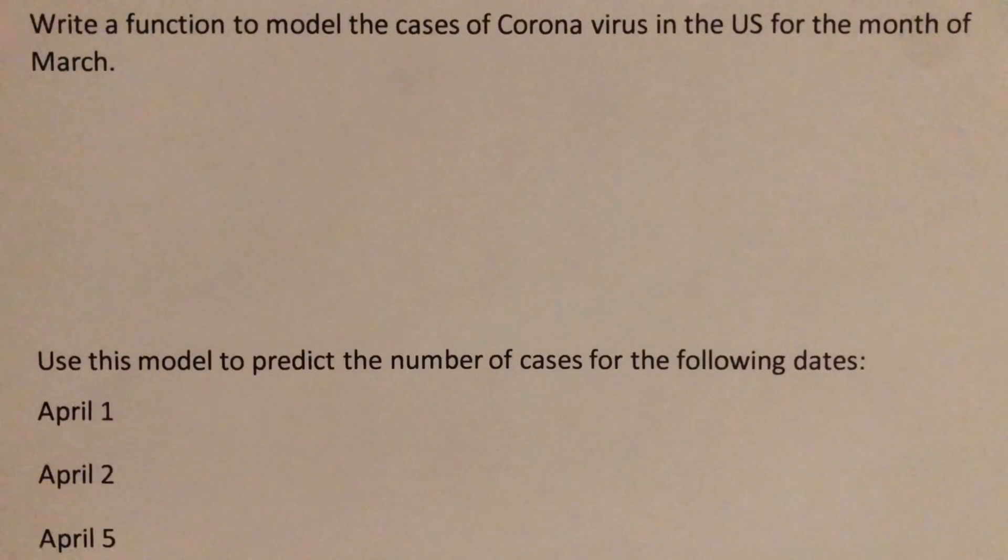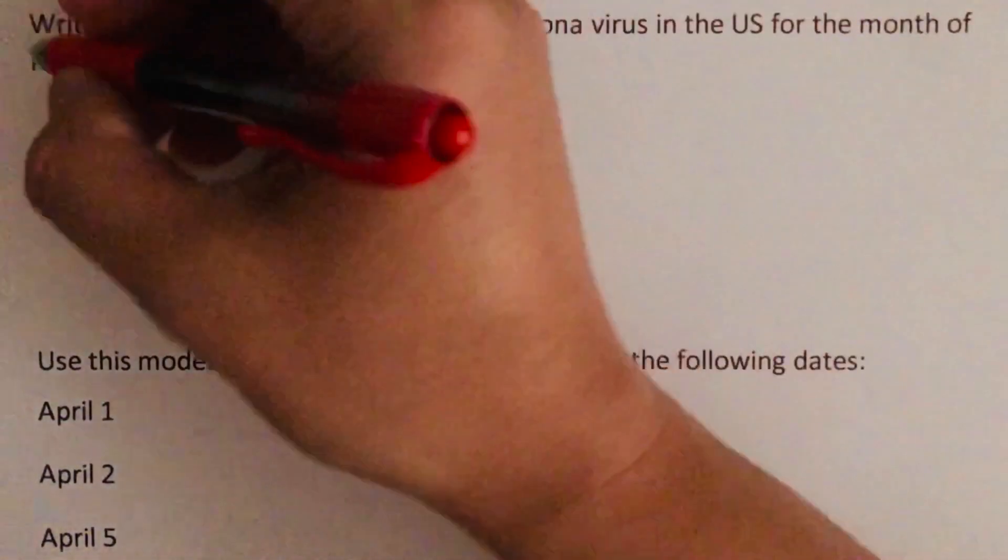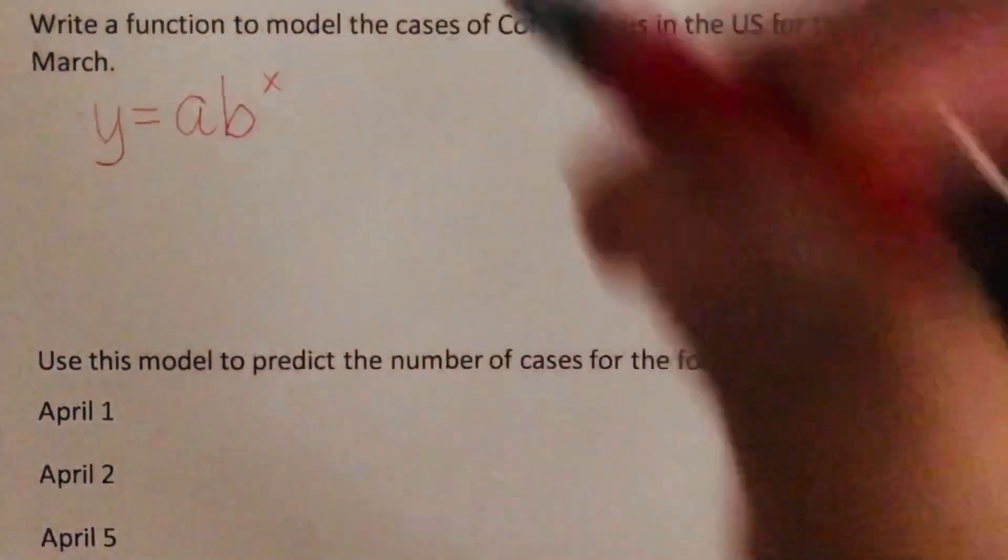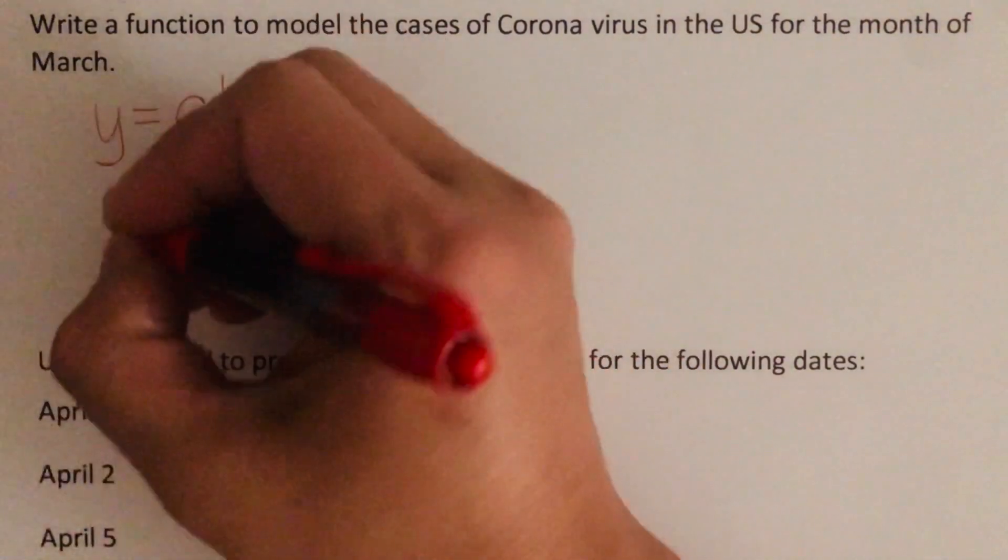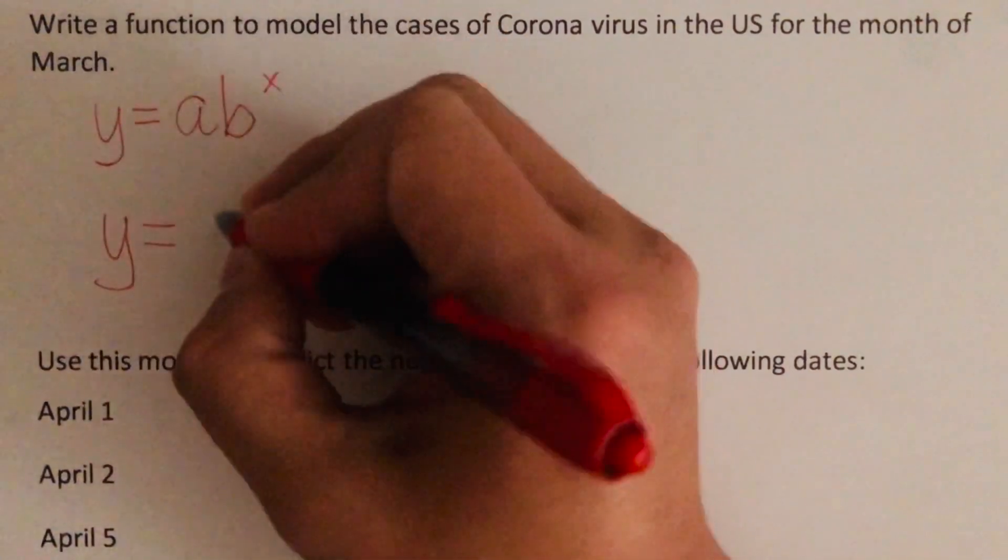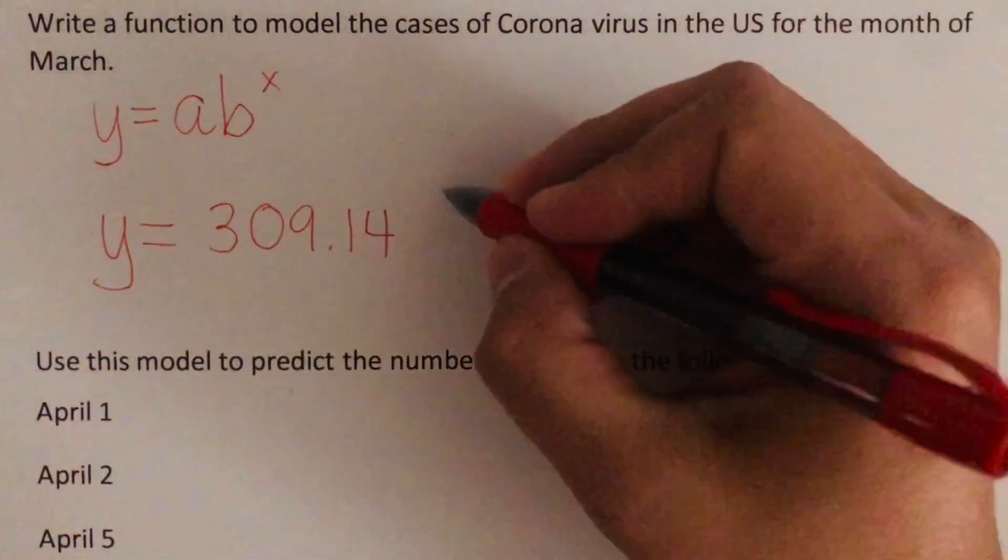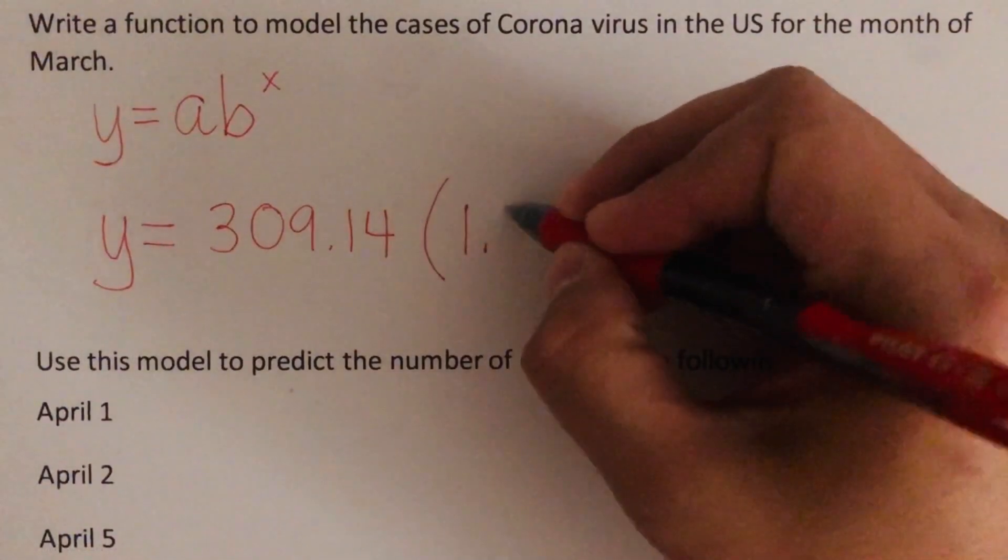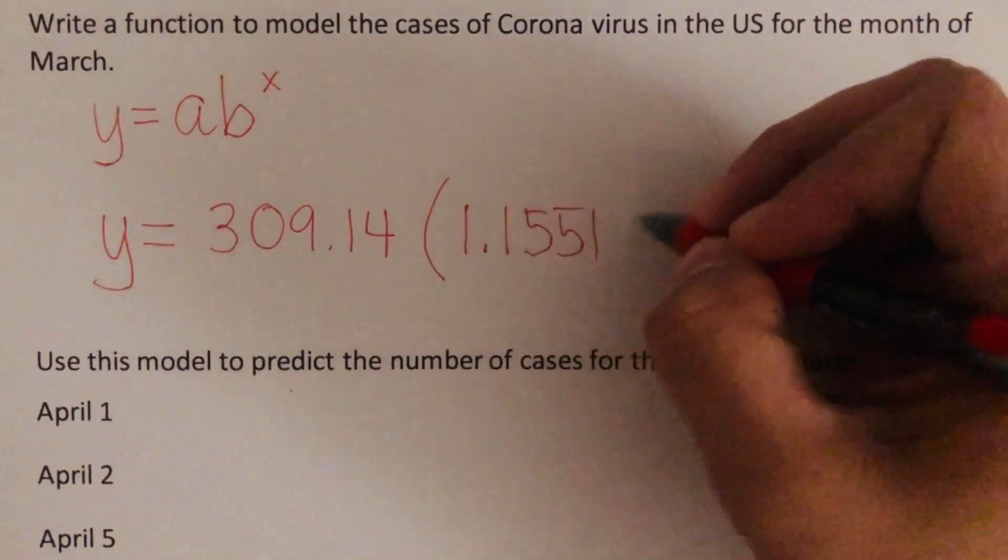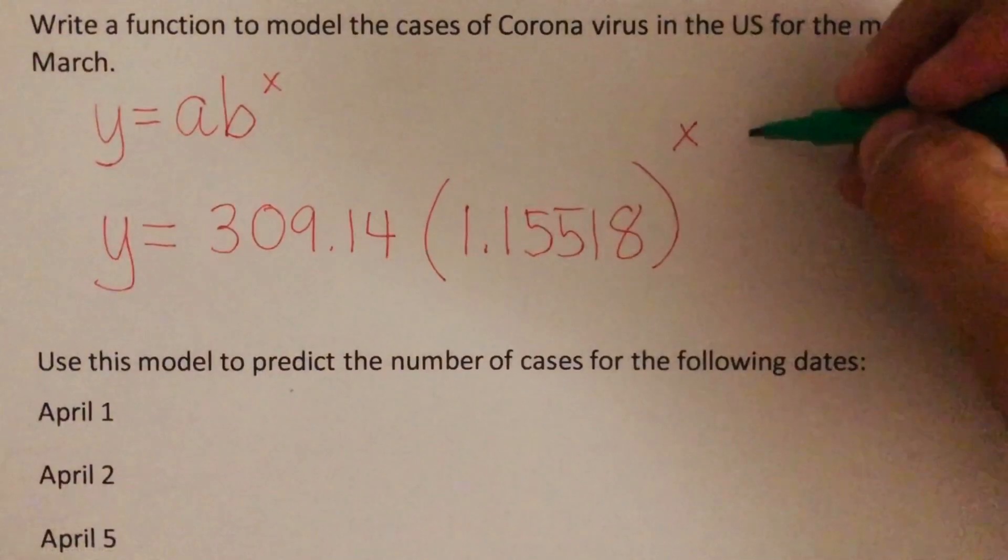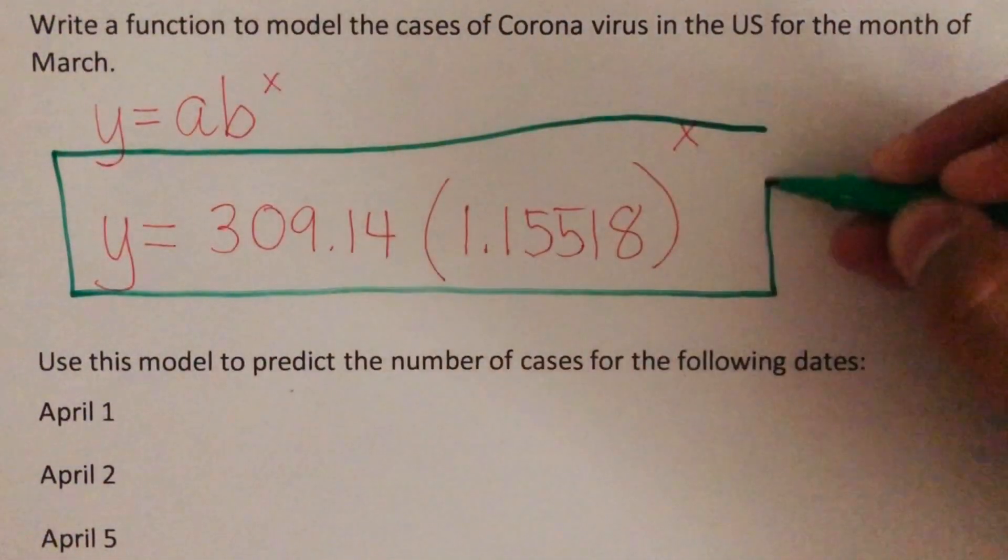Based on the models that we tried, we did linear, it did not work. We did quadratic, it did not work. But the exponential worked. And so again, the equation for the exponential that we used was y equals a b to the power x, where our a and b values that we got were actually y equals the a was 309.14. Again, I got this from Desmos. And then the b value that we got was 1.15518, and that's to the power x. And this is the equation that works for the data that we have on the first slide.